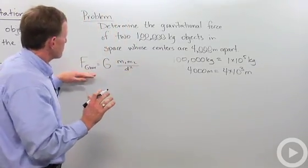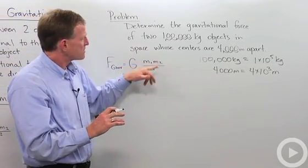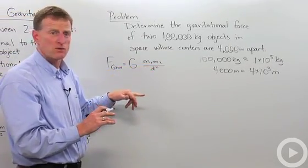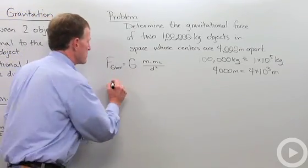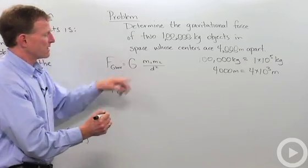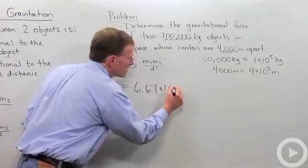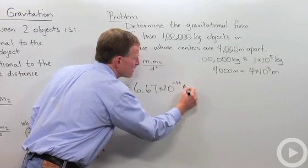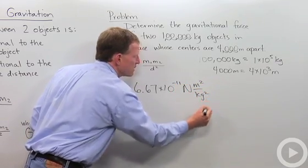So let's look at the equation. Force of gravity is G times M1 times M2 divided by the distance squared. So we just need to plug those numbers in. So my force of G is going to equal G, which is 6.67 times 10 to the negative 11 newton meters squared over kilograms squared.